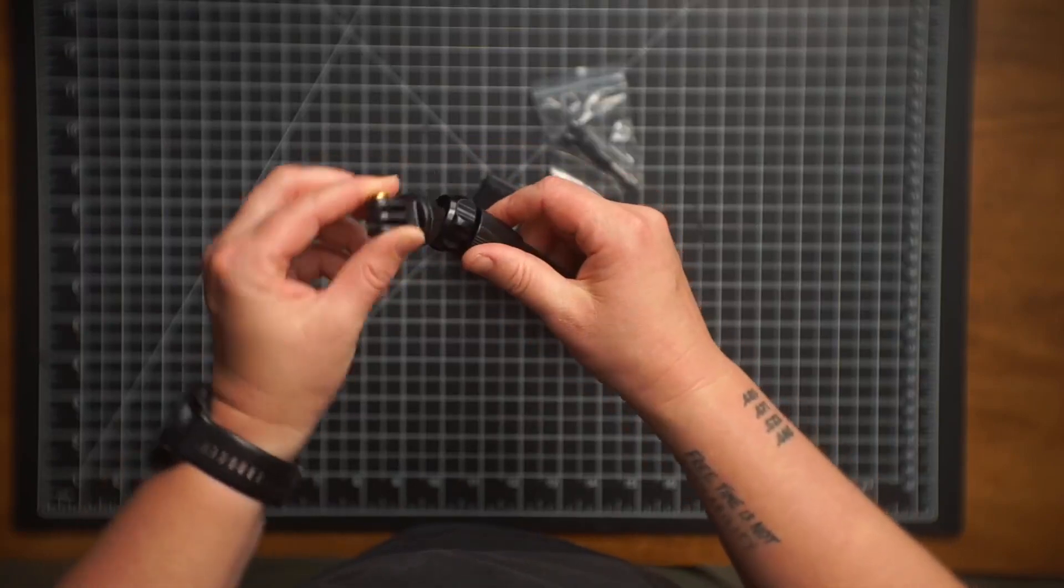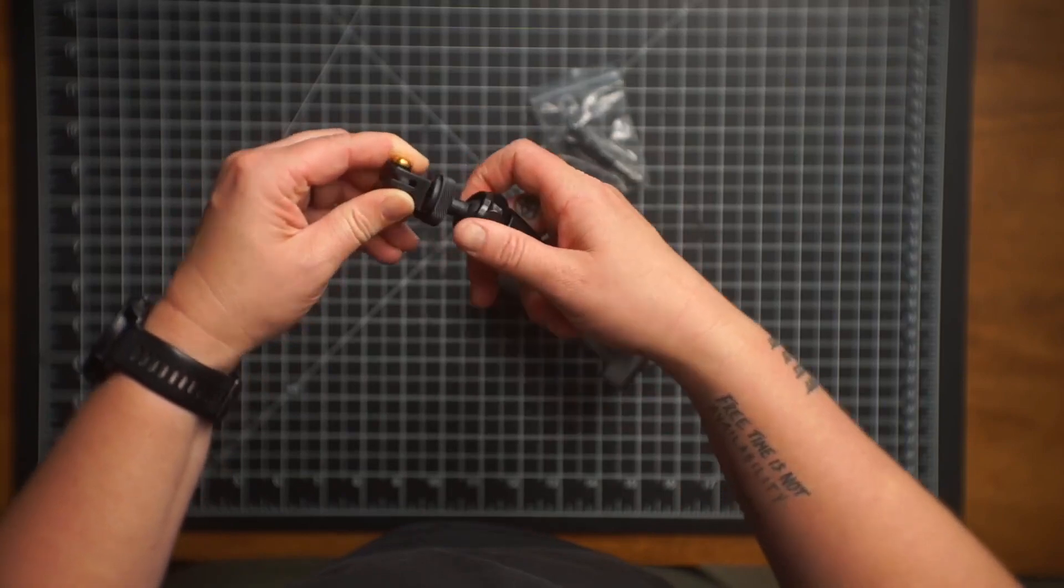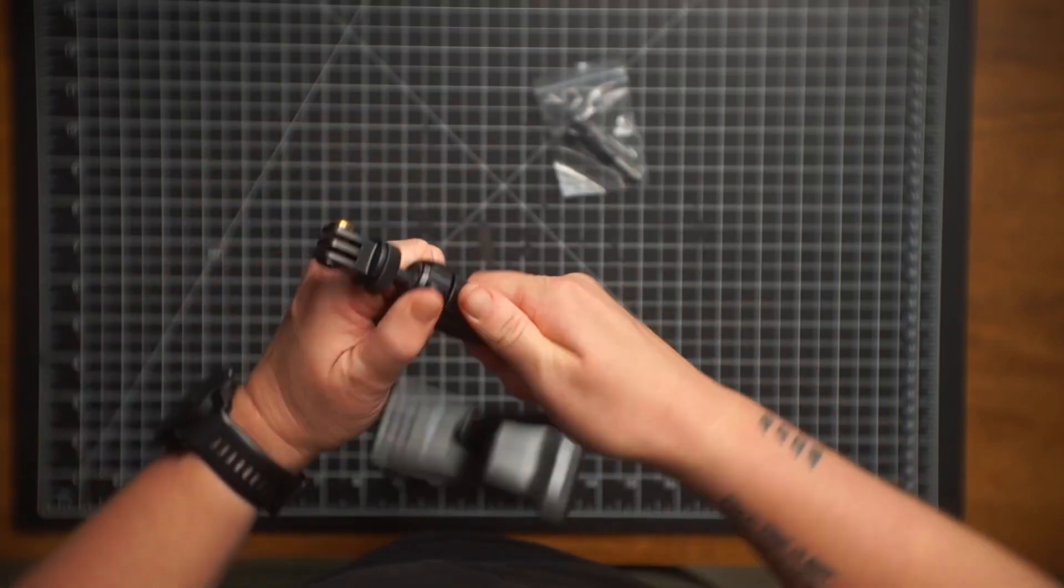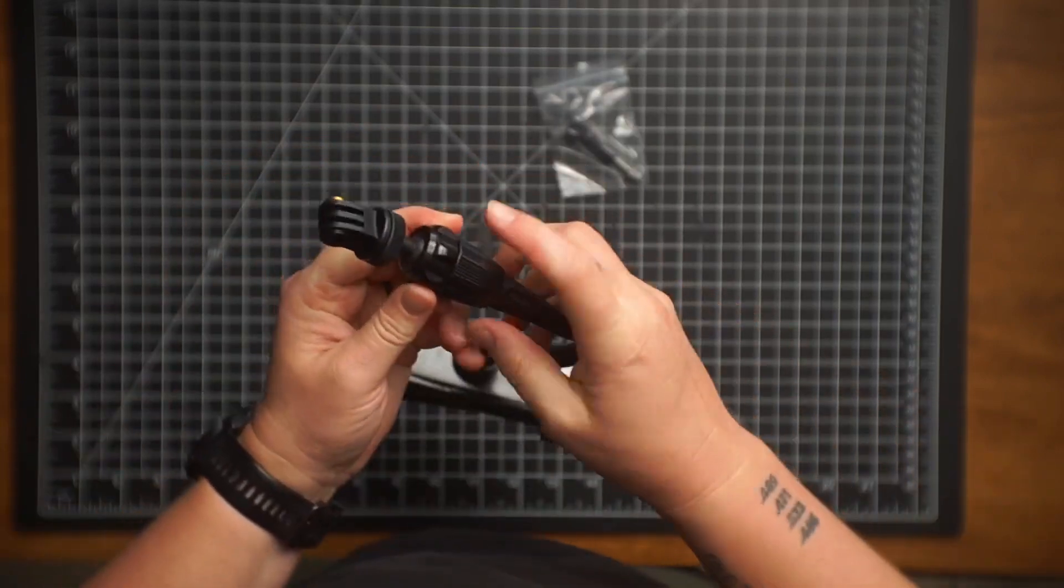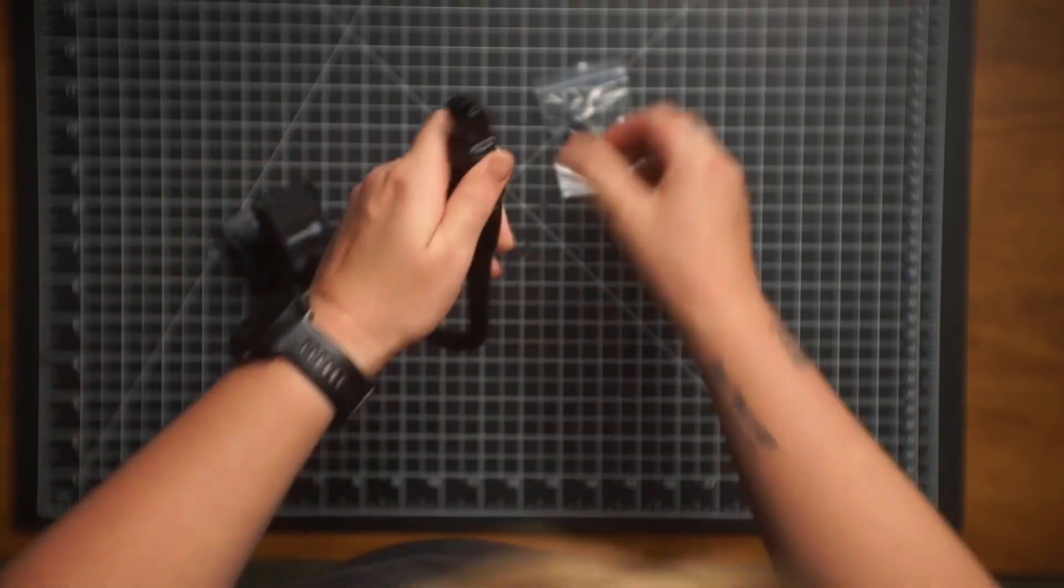Then you have this ball head mount here. And obviously that doesn't tighten that way. It tightens this way. So then you tighten that down like that. These components are definitely made of plastic, just to keep that in mind. That tightens down.